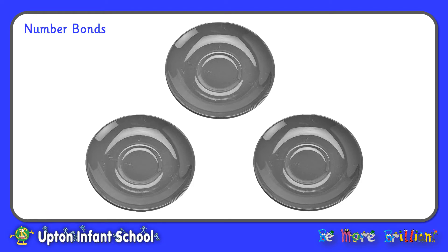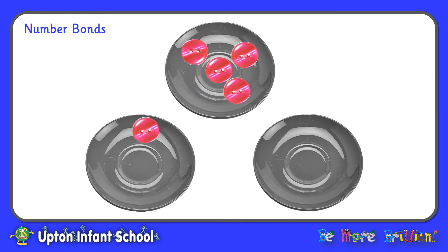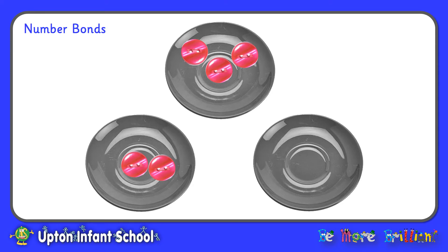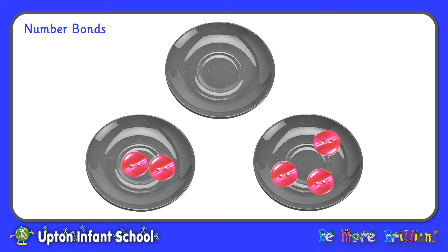So first of all, I have got my three saucers, and I'm going to put my five buttons on my first saucer. Now I'm going to think of the different ways that I can break my five buttons into two groups. So first of all, I'm going to put two buttons on this saucer and the other three buttons on this saucer. So I have split my five buttons into a group of two and a group of three. Two and three makes five.